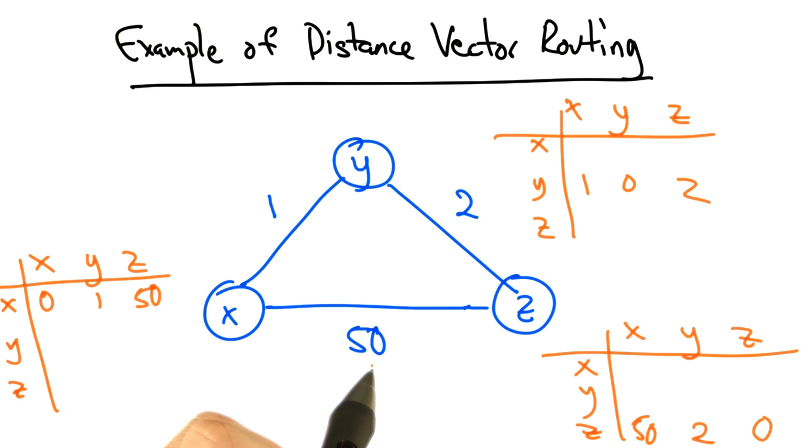Let's look at a different example. So for the sake of illustration, I've increased the cost between x and z to 50. And now everyone starts with a different set of initial distance vectors.